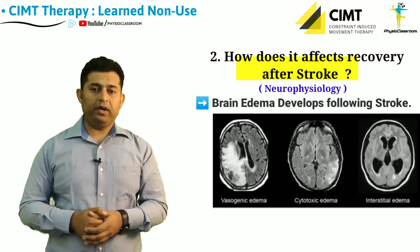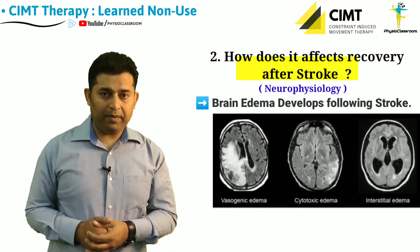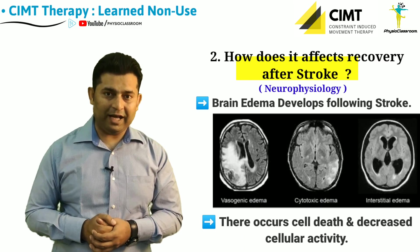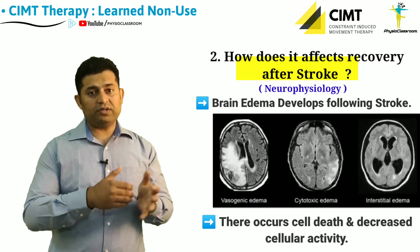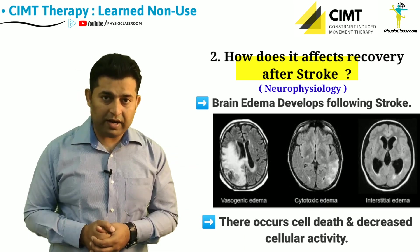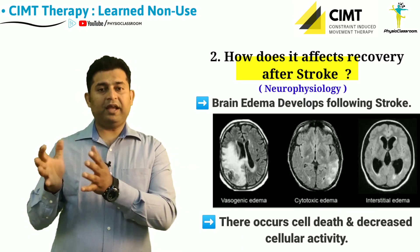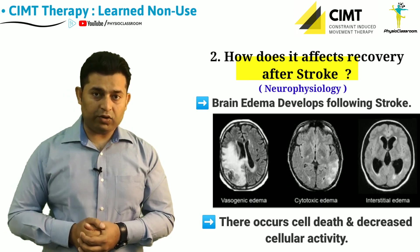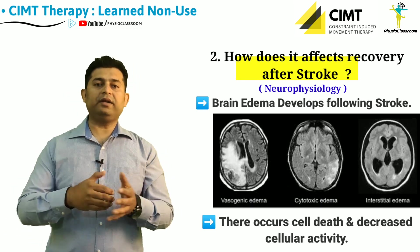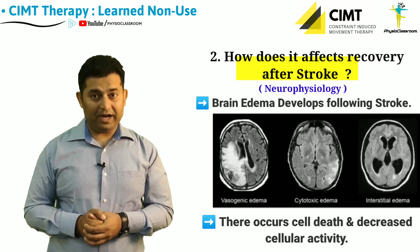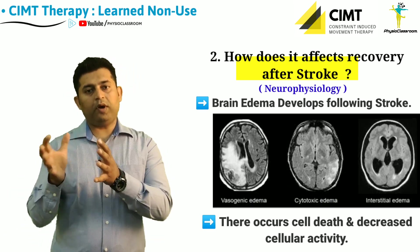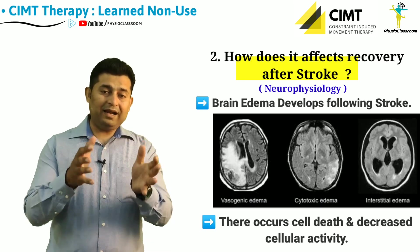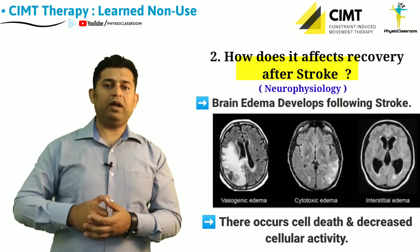Brain edema can be of three types: there can be vasogenic or vascular edema, there can be cellular or cytotoxic edema, and interstitial edema. Because of this, there is cell death and reduced cellular activity.